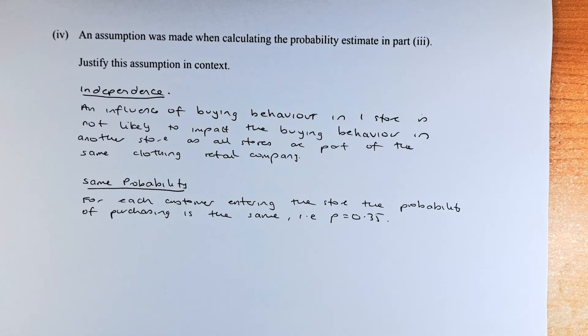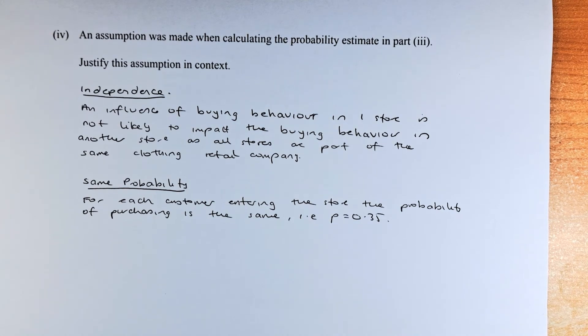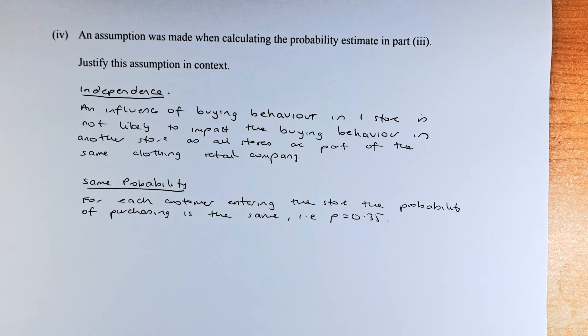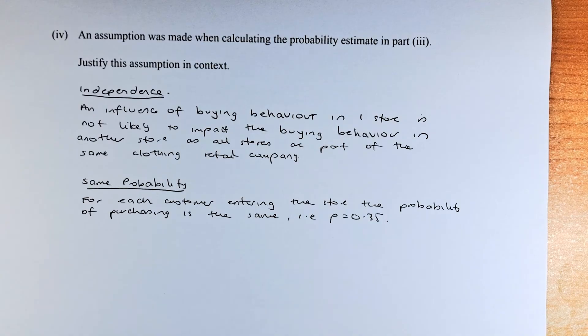So we're going to talk about 2 of them. We talk about independence and the probability is constant throughout. For independence, the influence of buying behaviour in one store is not likely to impact the buying behaviour in another store, as all stores are part of the same clothing retail company. So that is an assumption we made for independence.